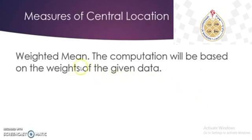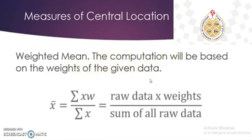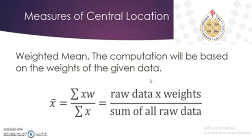Next, let's have the weighted mean. The computation of weighted mean will be based on the weights of the given set of data. To compute the weighted mean, it is the raw data times the weight, divided by the sum of all the weights.